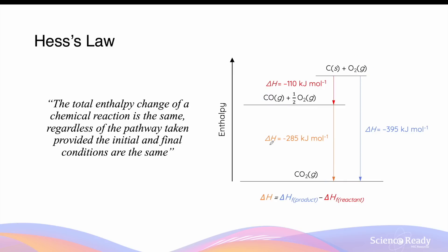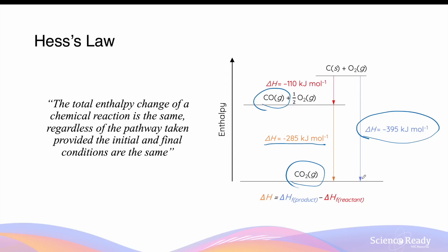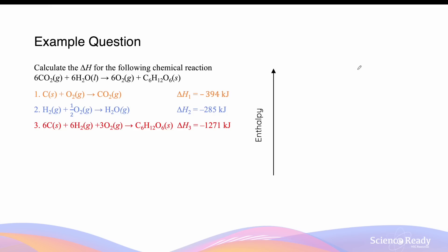This diagram also explains why the enthalpy change of the reaction equals the difference between the enthalpy of formation of the product (carbon dioxide) minus the enthalpy of formation of the reactant (carbon monoxide). The blue arrow shows the enthalpy of formation of the product — forming CO₂ from its constituent elements in standard states — and the red arrow shows the enthalpy of formation of the reactant, carbon monoxide, formed from its constituent elements in standard states.